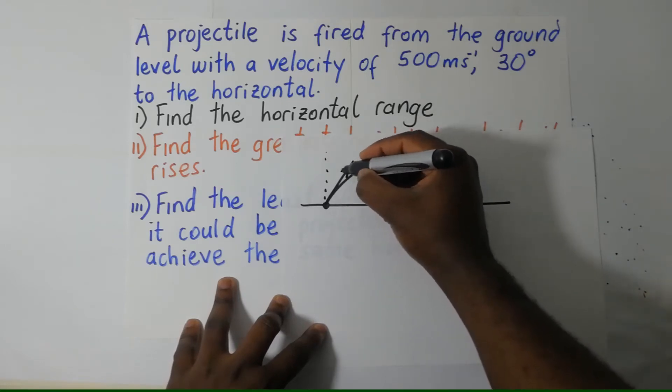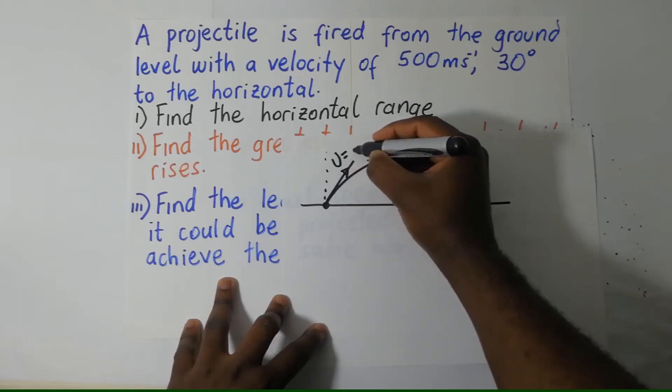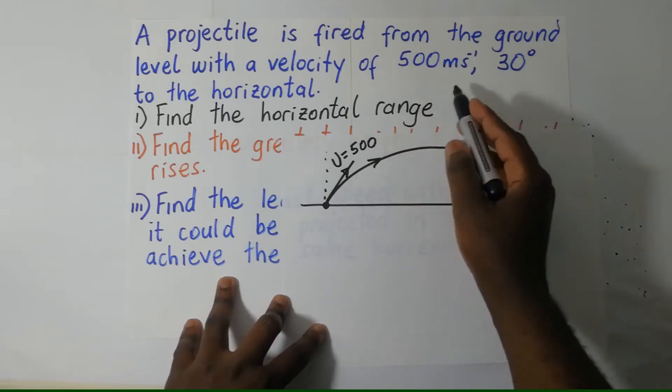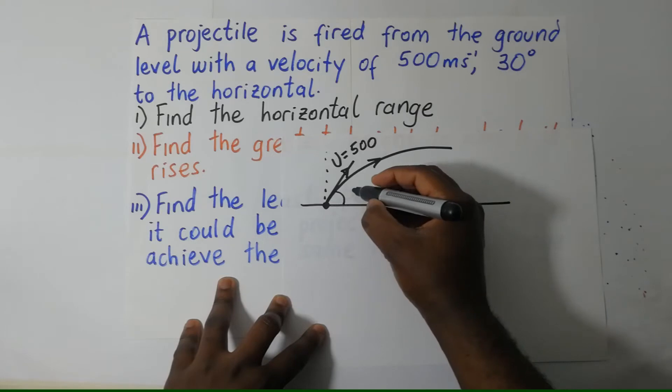The initial velocity here, our value of U is 500 meters per second. And the angle here is 30 degrees.